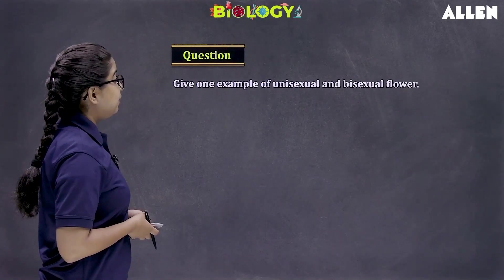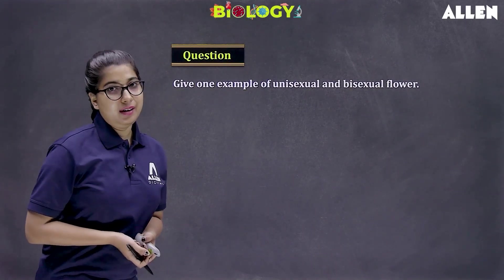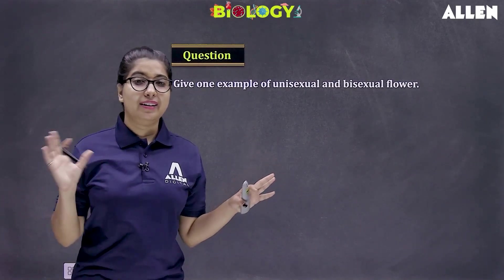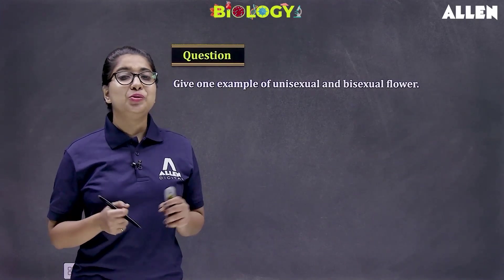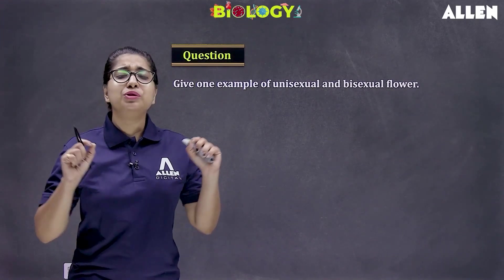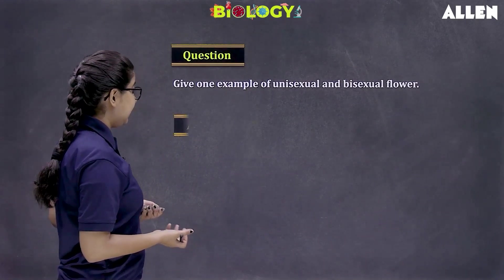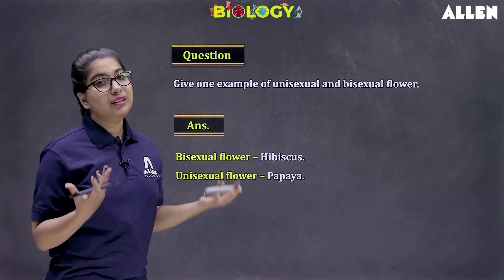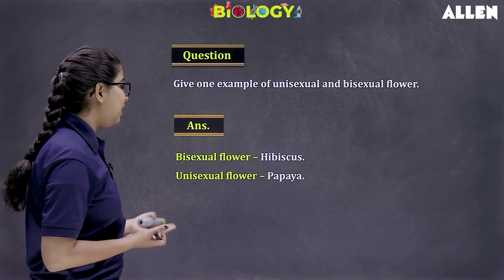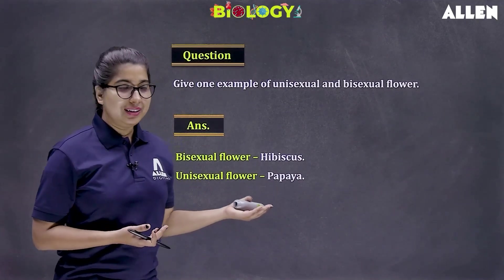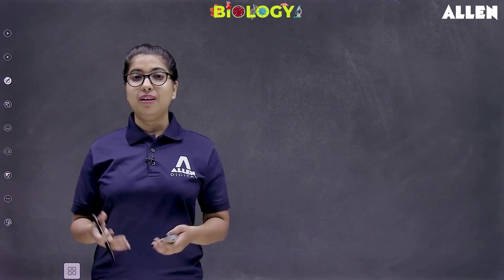The process of reproduction is necessary for the continuation of species and to increase the number of members of a species — the population size is maintained through this. Give one example of a unisexual and bisexual flower: papaya and date palm are unisexual flowers. Hibiscus, which we commonly see in our schools, is actually a bisexual flower — it produces both the male gametes and the female gametes. That's all. Thank you so much.